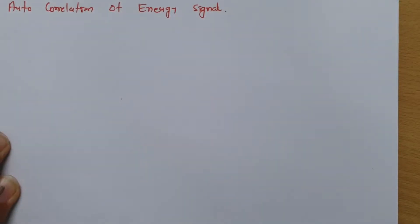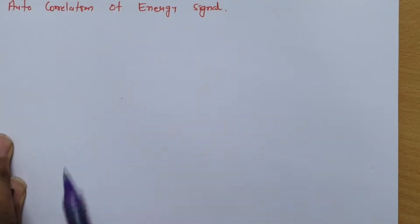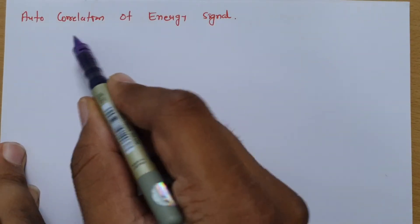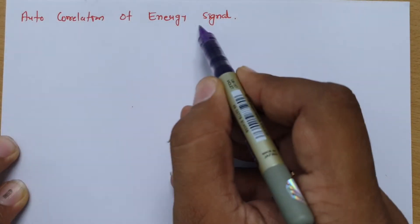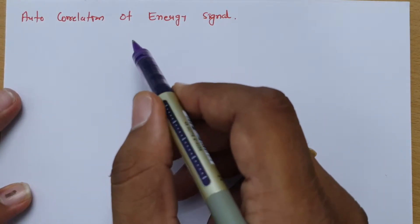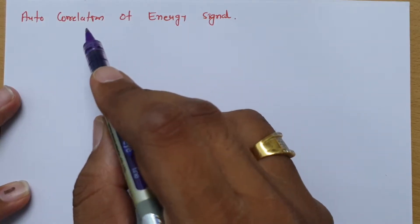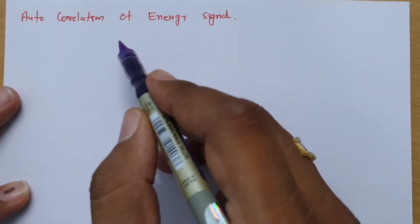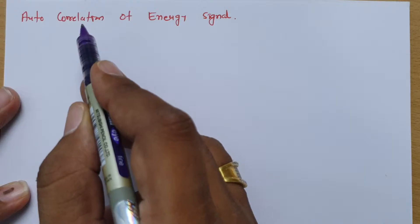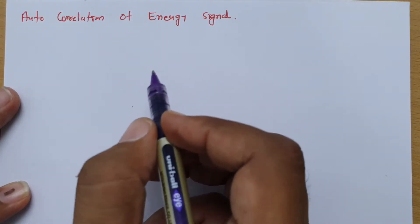Welcome to the Signal and System lecture series. In this session, I will explain autocorrelation of energy signals. In the previous session, I explained the meaning of correlation. Now in this session, we will see autocorrelation and that of energy signals.